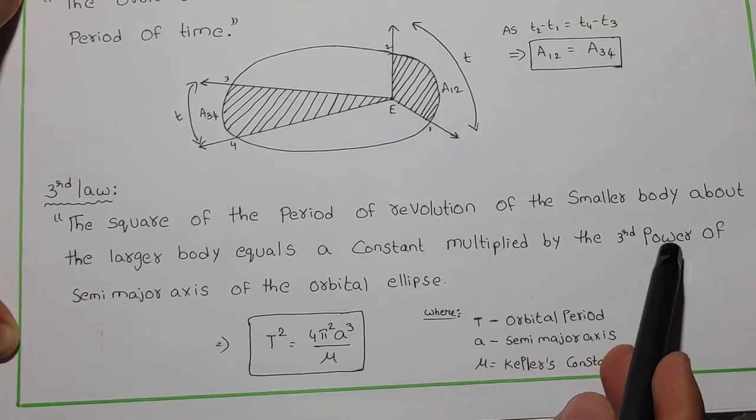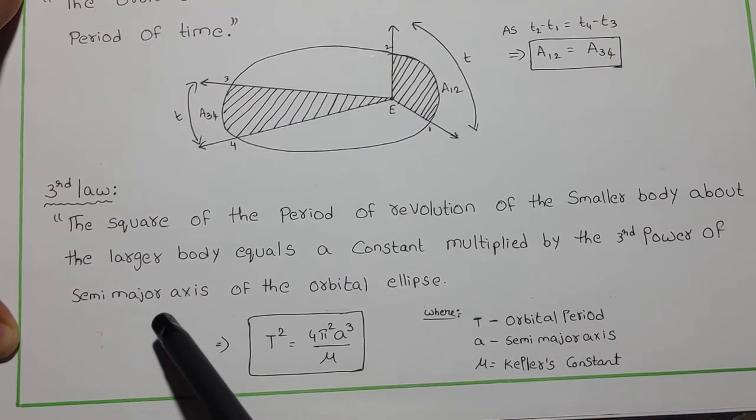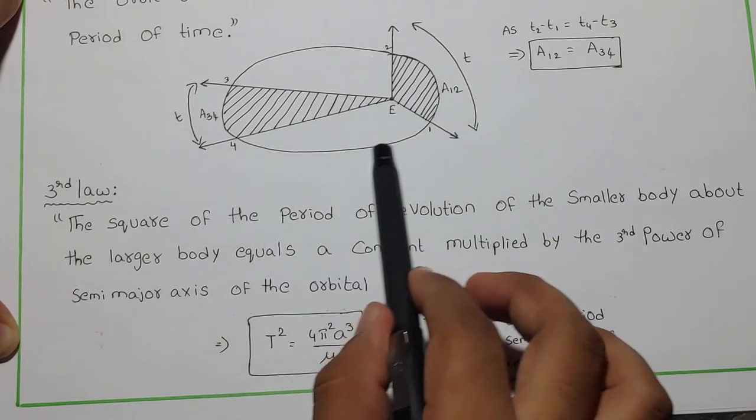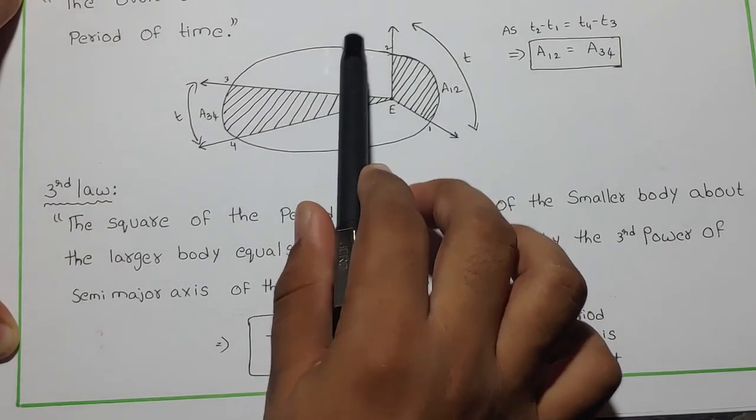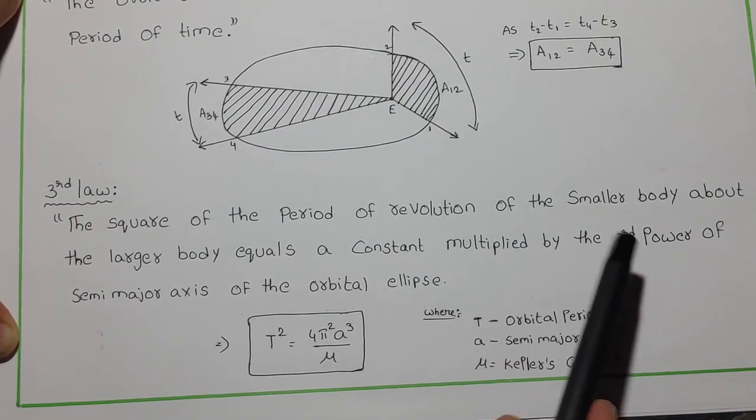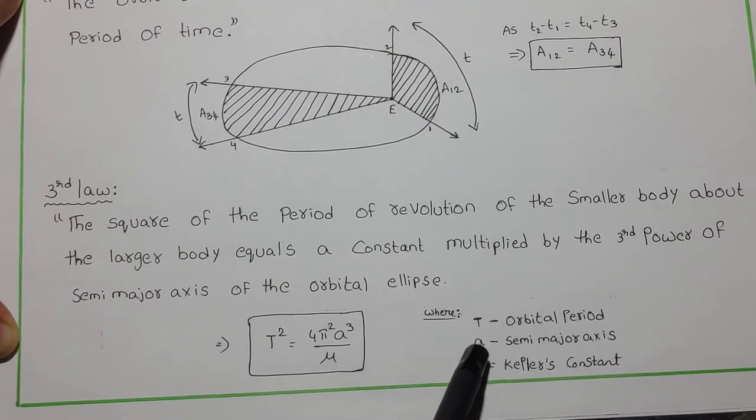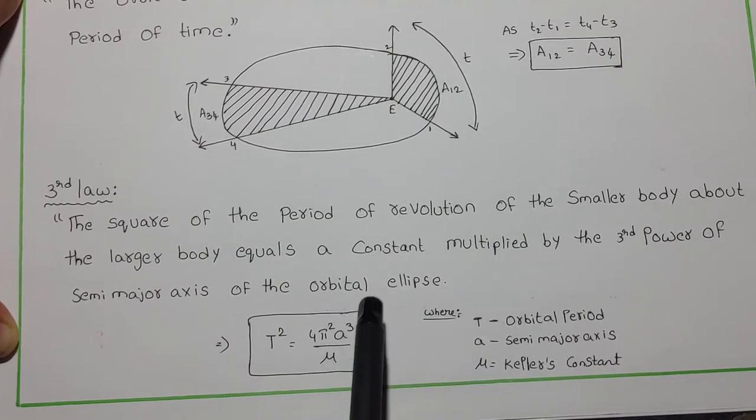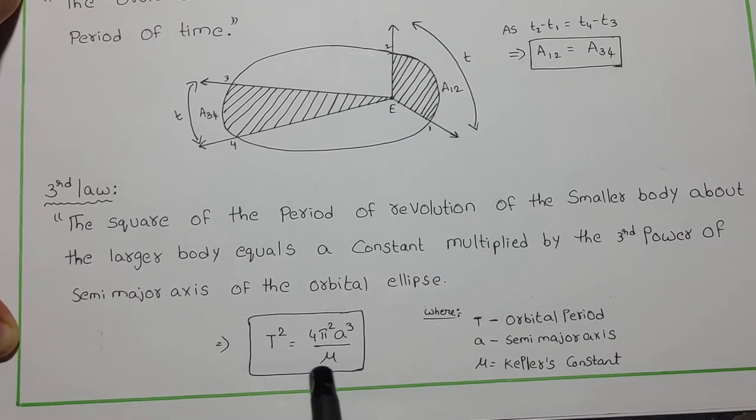We have already discussed that an ellipse has two axes, that is semi-major axis and semi-minor axis. Here constant multiplied by third power of semi-major axis, which is a. So we could write by the third law of Kepler: T squared equals 4 pi squared a cubed by mu.